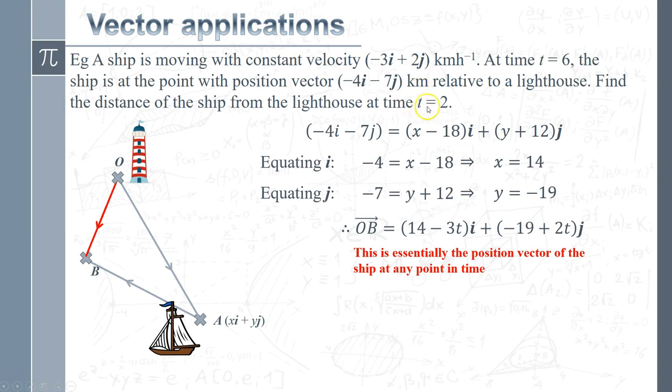Okay. Last step is then to chuck in this because what we're being asked for is what happens when t equals 2. What's the distance to the ship from the lighthouse? So let's plug in the values when t equals 2. That gives me OB is all of that. So I've just replaced the t with 2 in both of those vectors. And so we've got 8i minus 15j.